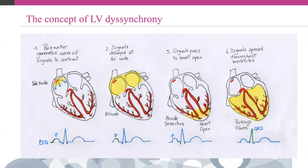On a regional level, this process results in myocardial thickening and hence the movement of the endocardial layers towards the center of the cavity, ejecting blood out of the ventricles.